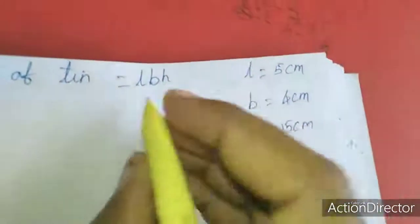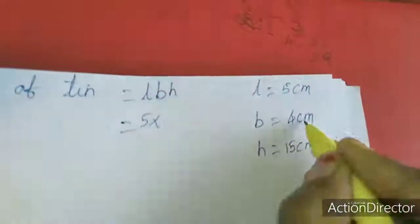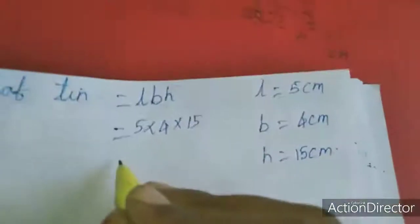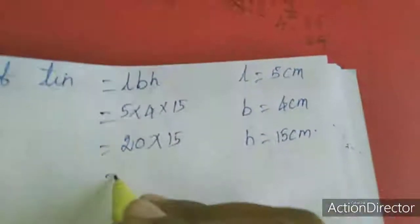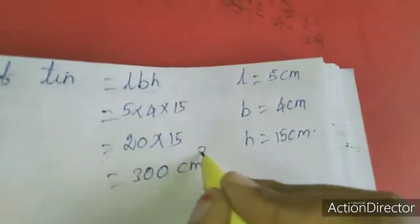First, I'll find the volume of the tin, which is a cuboid. Volume equals l times b times h, so 5 times 4 times 50, which equals 1000 cubic centimeters.